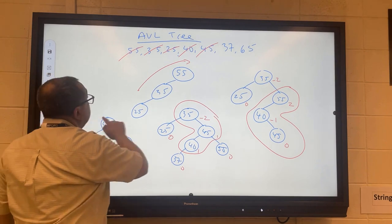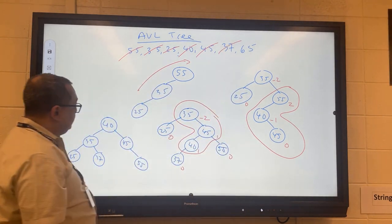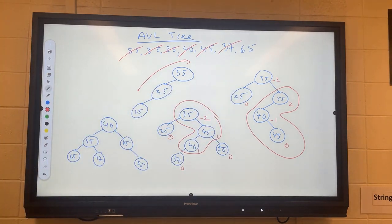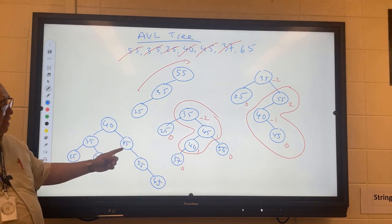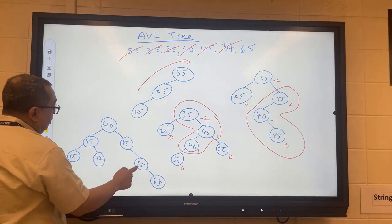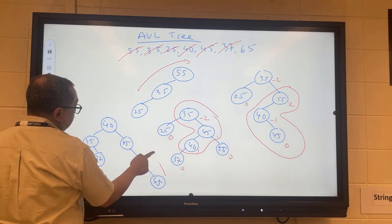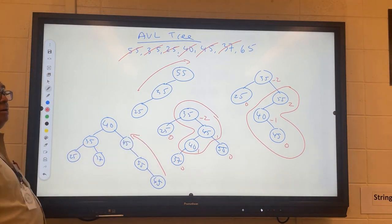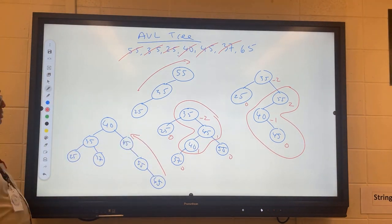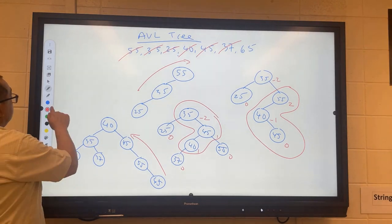So now we're done with this one. The last one we have to add is 65. Where's that one going to go, Mr. Alejandro? Which is the node that's gotten out of balance now? The 45 has gotten out of balance. So you can see that here we're going to need to do a RR rotation. So the final tree will look like this now.